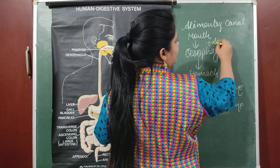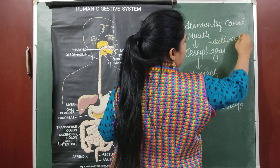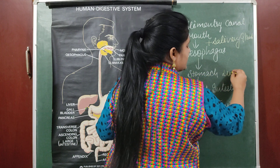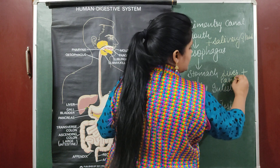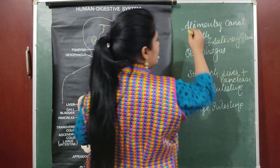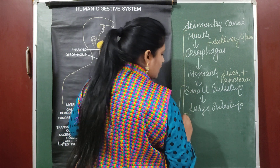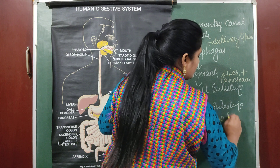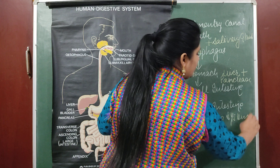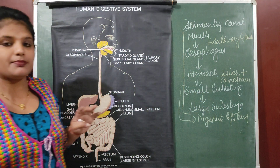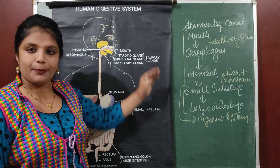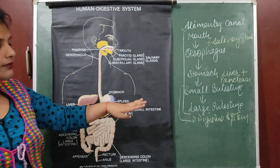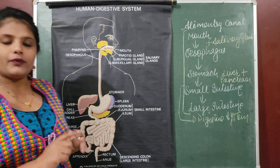Here we have salivary glands, here we have the liver which is the largest gland, plus we have the pancreas and the gallbladder. Now all together this is considered the digestive system. The difference between alimentary canal and digestive system must be clear: the alimentary canal is the pathway — none of the glands are included in it.